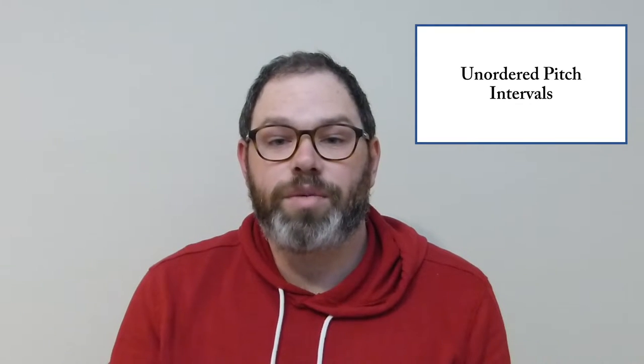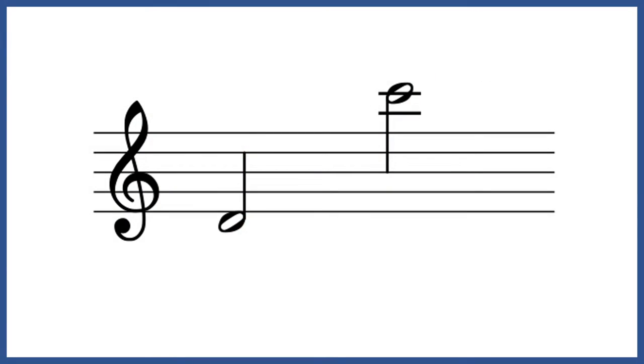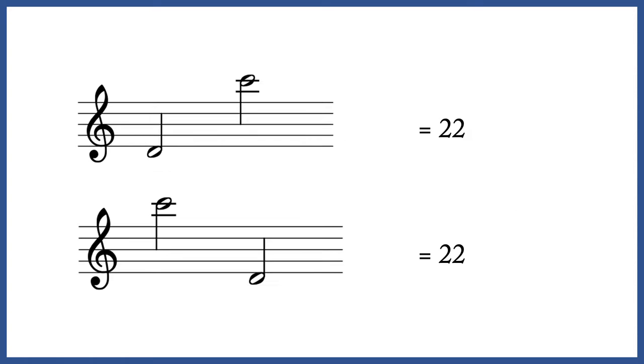In this case, whether we start on our low D and ascend to the high C, or if we start on the high C and descend to the low D, as unordered pitch intervals, they're both simply 22 semitones. Like in tonal music, sometimes we care about the register of the pitches we're analyzing, and sometimes we don't.